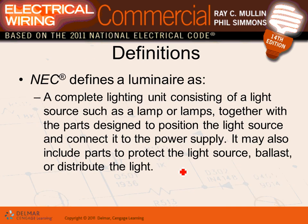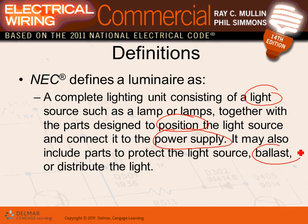Here's how the NEC defines luminaires. A complete lighting unit consists of a lighting source — such as a lamp — together with the parts designed to position it. The lighting source connects to the power supply. Some of them are ballasted. And diffusers are used to distribute the light.